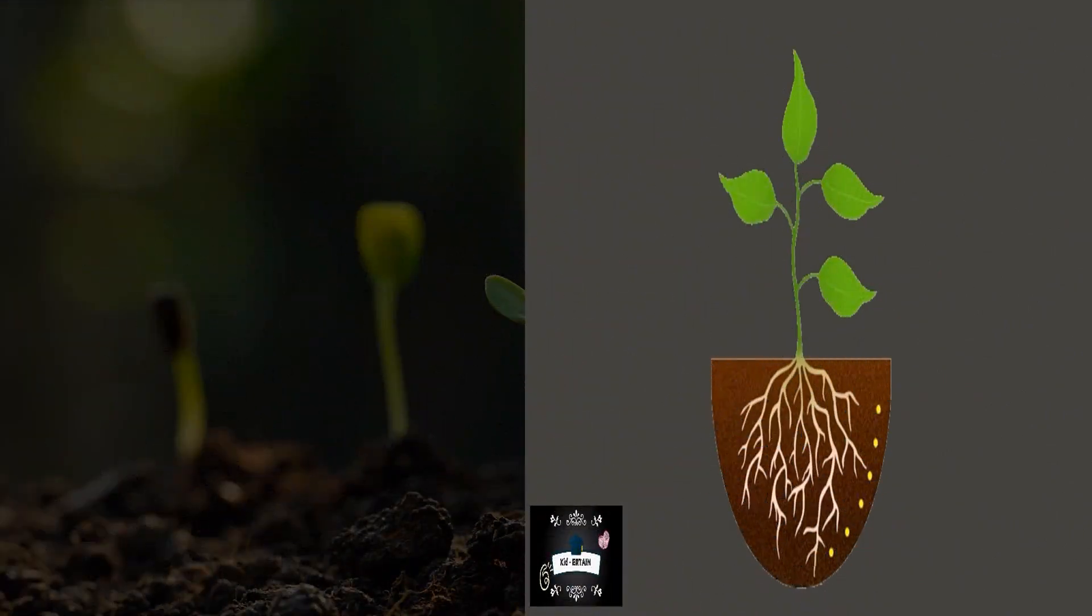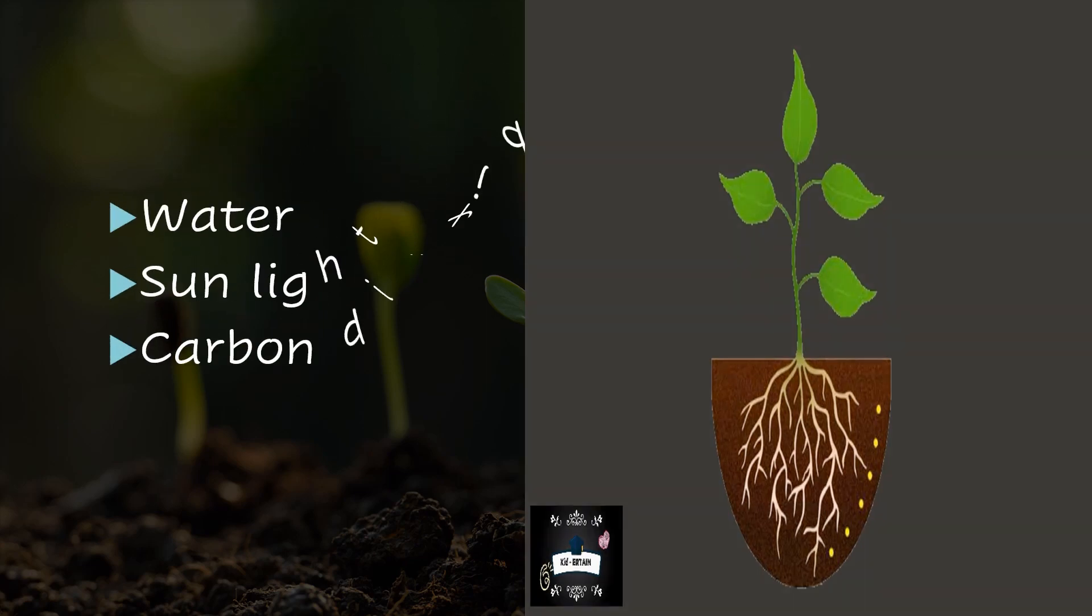For that, plants need three important basic things. They are water, sunlight and carbon dioxide.